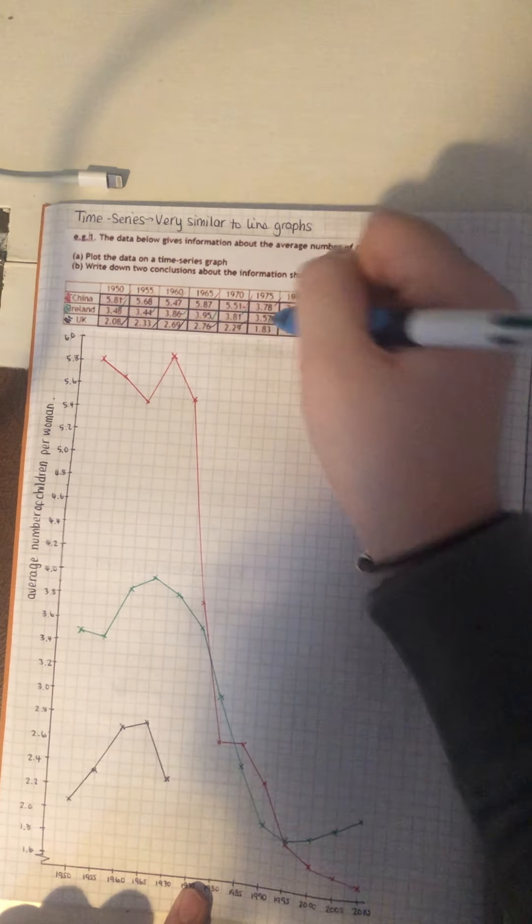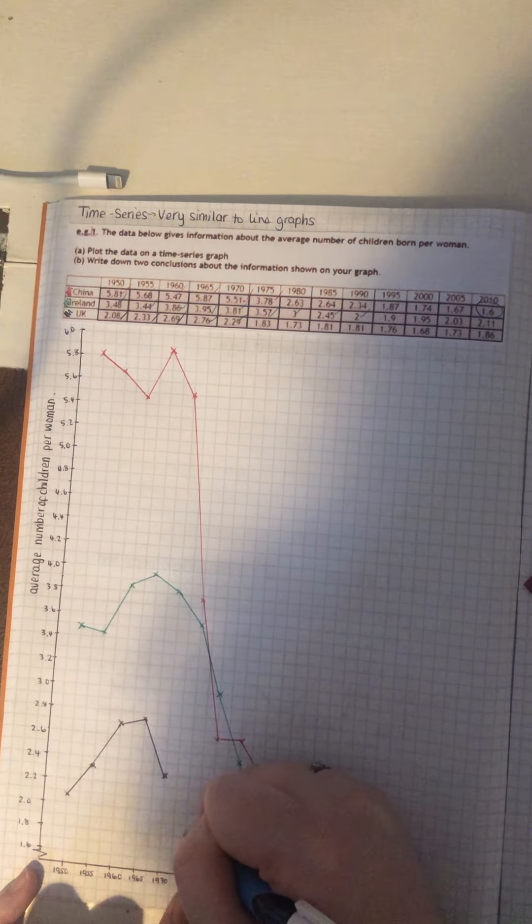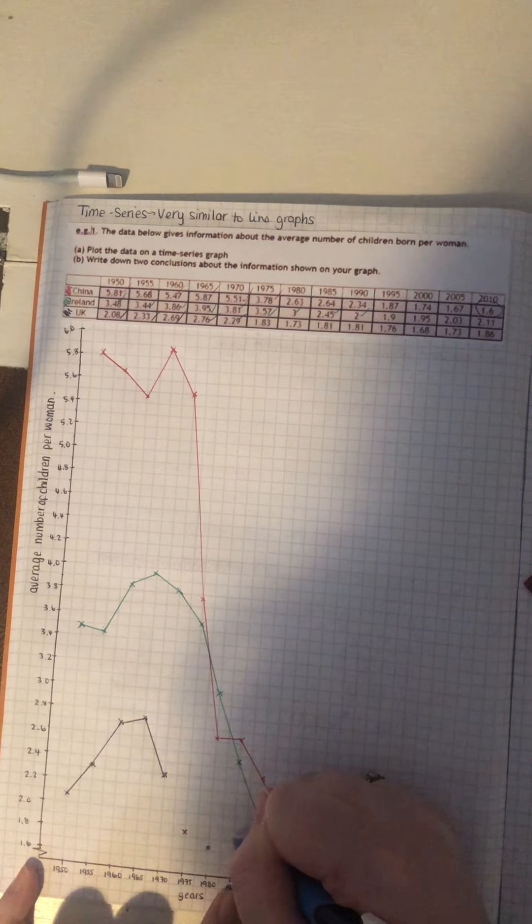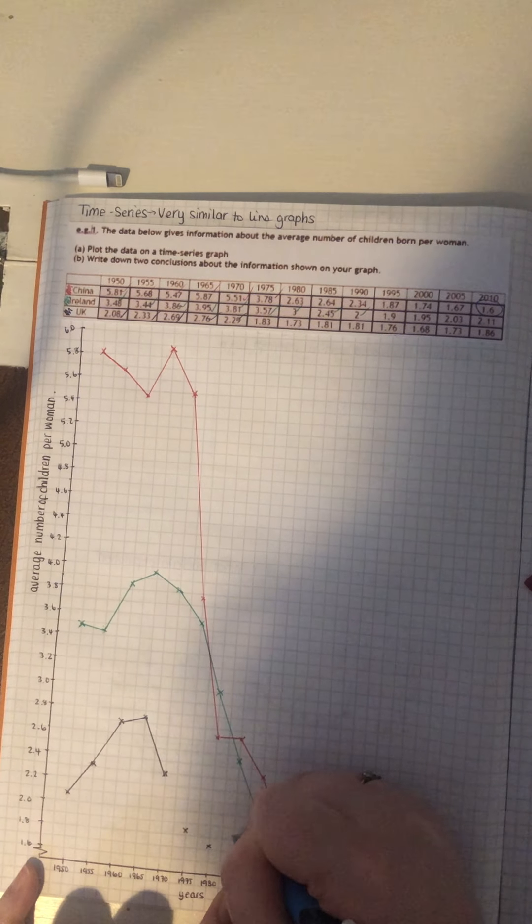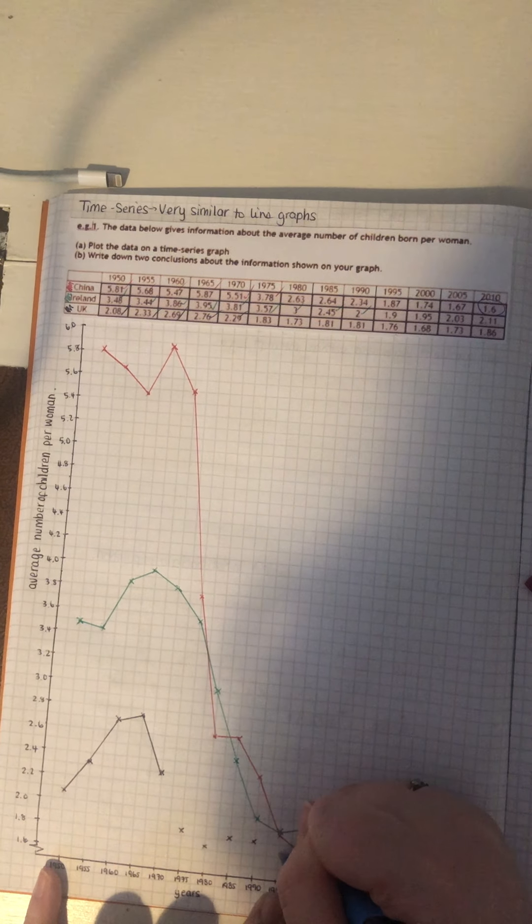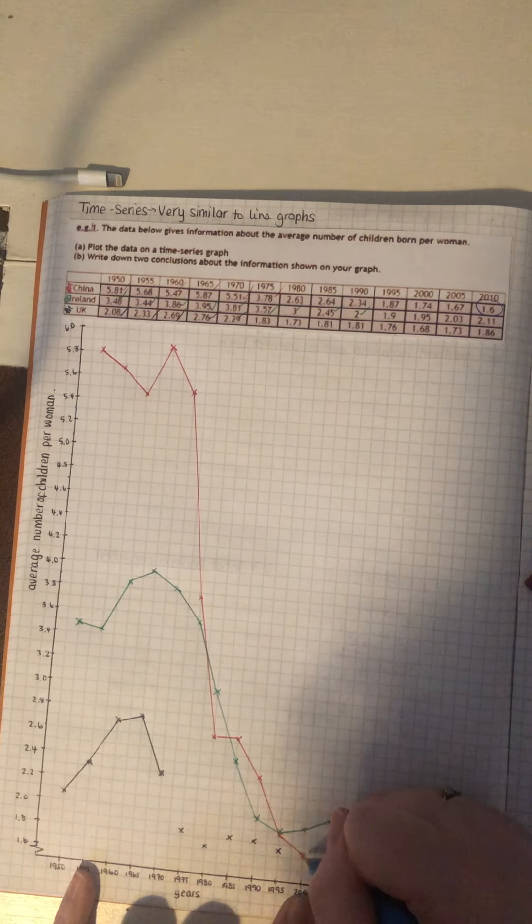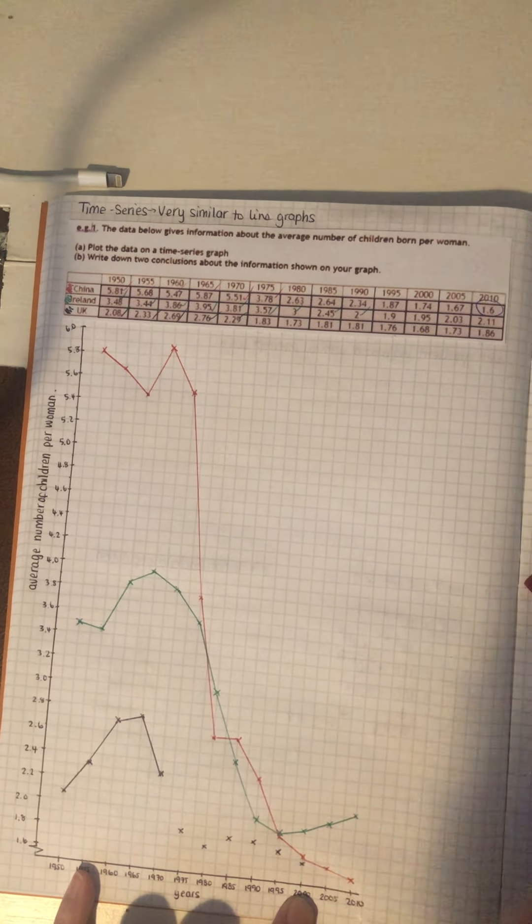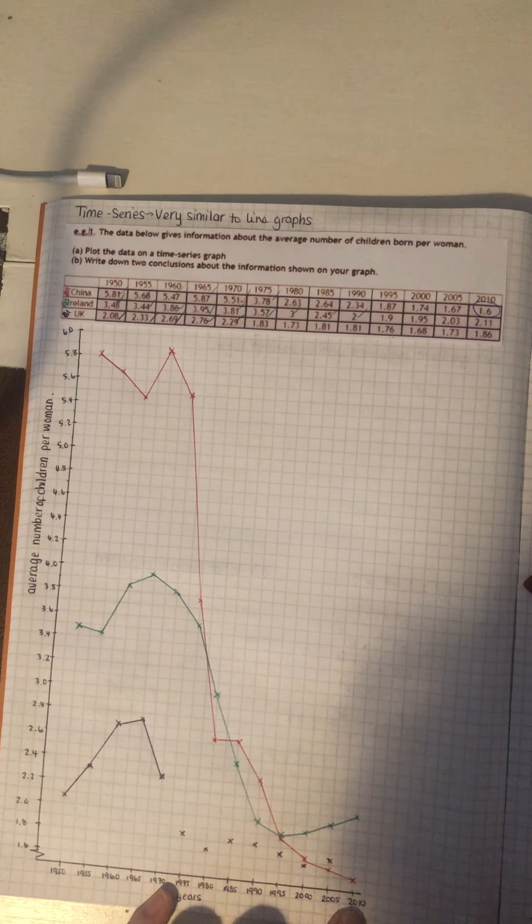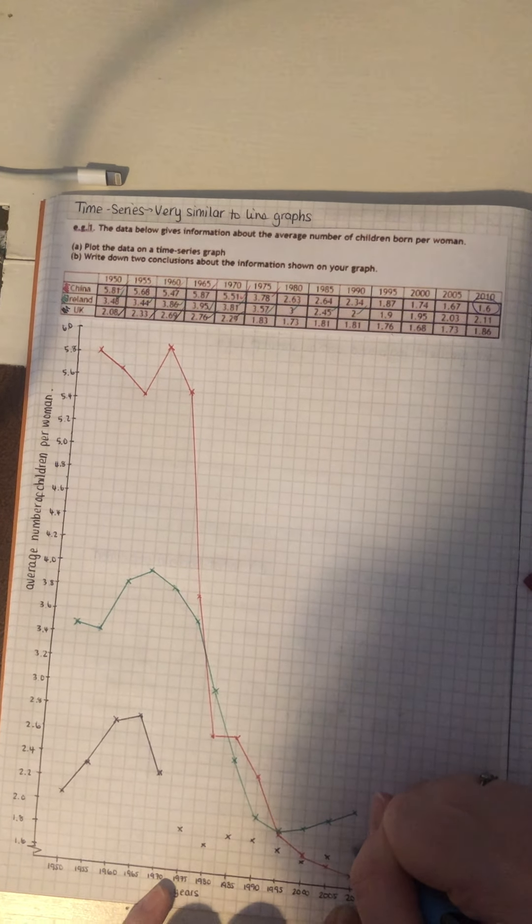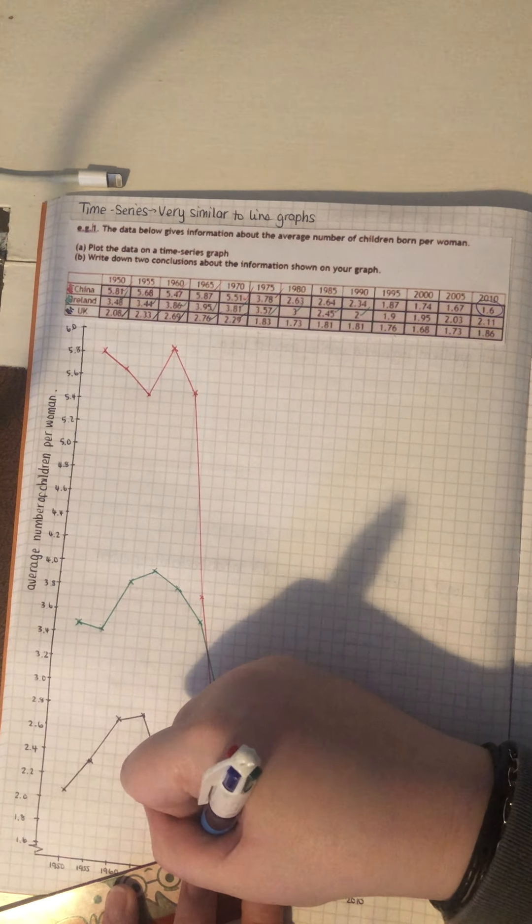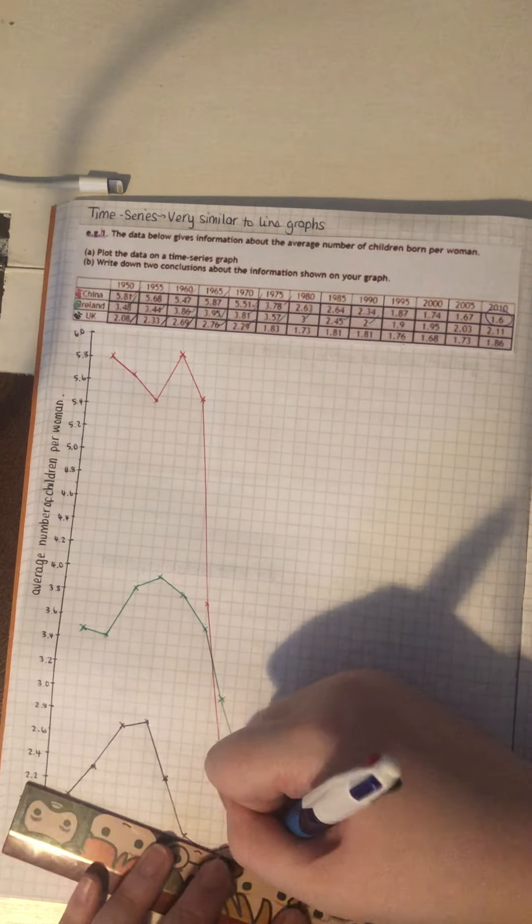So, we're at 1975, which is 1.83. So, we've lowered quite a lot. 1980 is 1.73. Then back to 1.81. And we've got that two years running. 1995 is 1.76. So, it's going to be roughly there. 2000 is 1.68. So, it's dropped. 2005 is 1.73. So, it's risen a tiny bit. 2010 is 1.86, roughly there. So, you can just plot them and then connect them after. Is that easier for you? I think it's easier. That's just me.